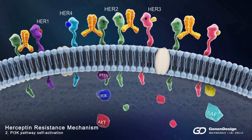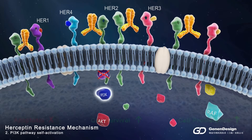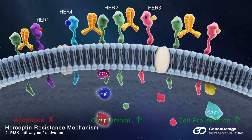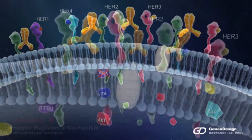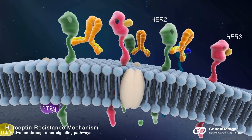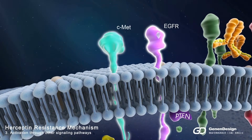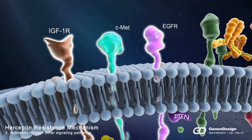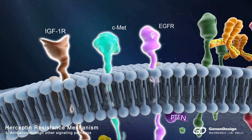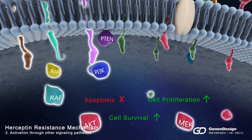The second resistance mechanism involves upregulation of HER2 downstream signaling pathway. Mutations in PI3K or AKT, or loss of PTEN, cause constitutive activation of downstream signaling and resistance to Herceptin treatment. Third, the resistance to Herceptin could also be due to activation of other signaling pathways, including EGFR, CMET, and IGF. In these cases, the growth inhibition effect induced by Herceptin can be compensated by increased signaling through other pathways, resulting in Herceptin resistance.